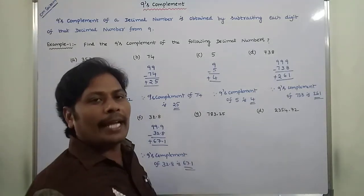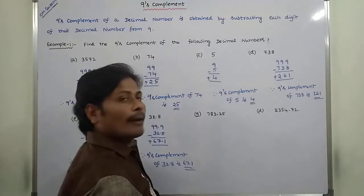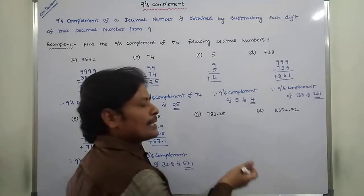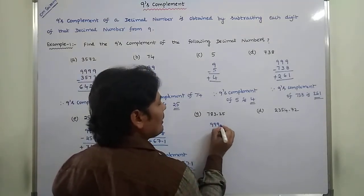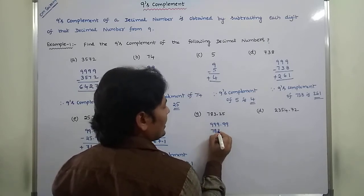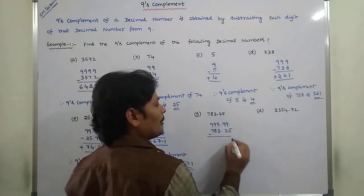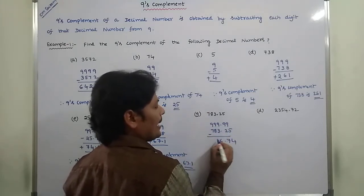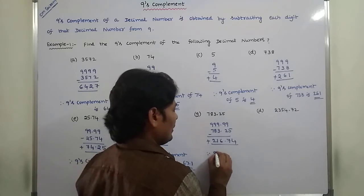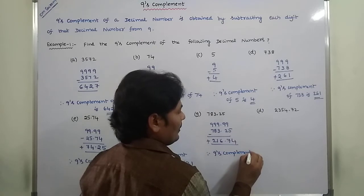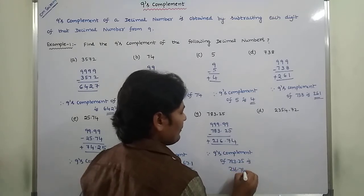Next, what is the 9's complement of 783.25? Before the decimal point, 3 digits. After the decimal point, 2 digits. Total 5 digits, each subtracted from 9. 9 minus 5 is 4, 9 minus 2 is 7, 9 minus 3 is 6, 9 minus 8 is 1, 9 minus 7 is 2. So the result is 216.74. Therefore, the 9's complement of 783.25 is 216.74.